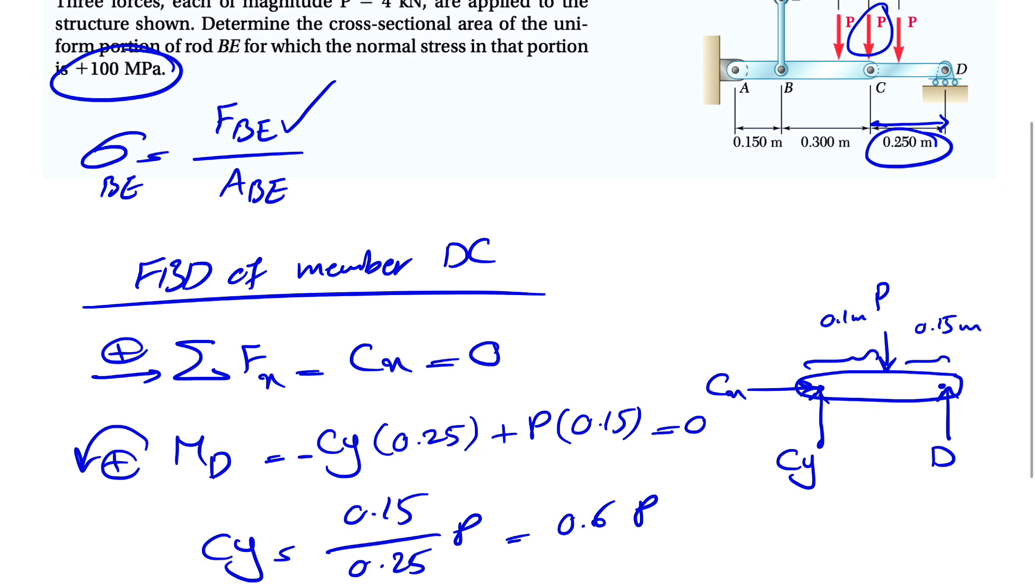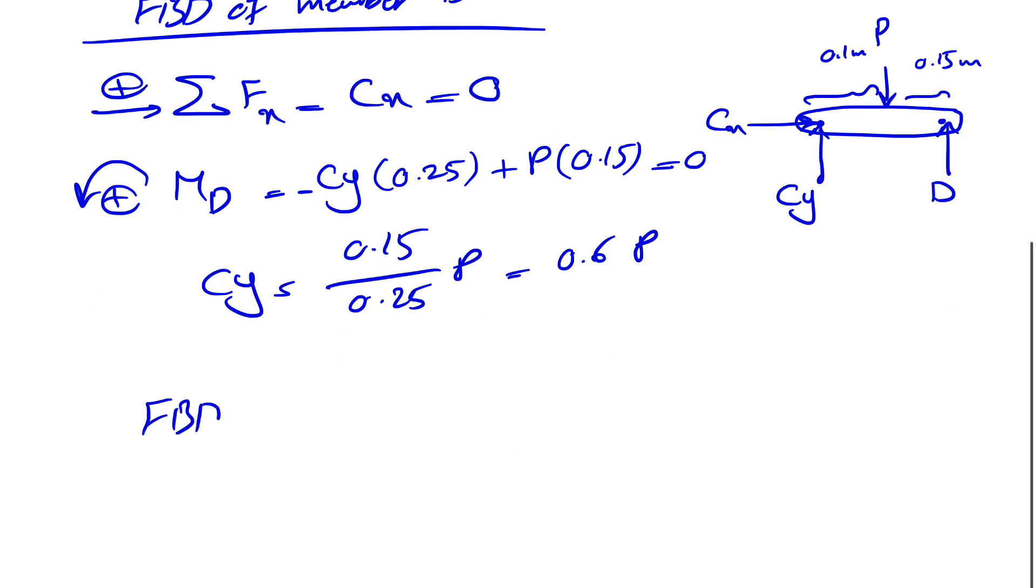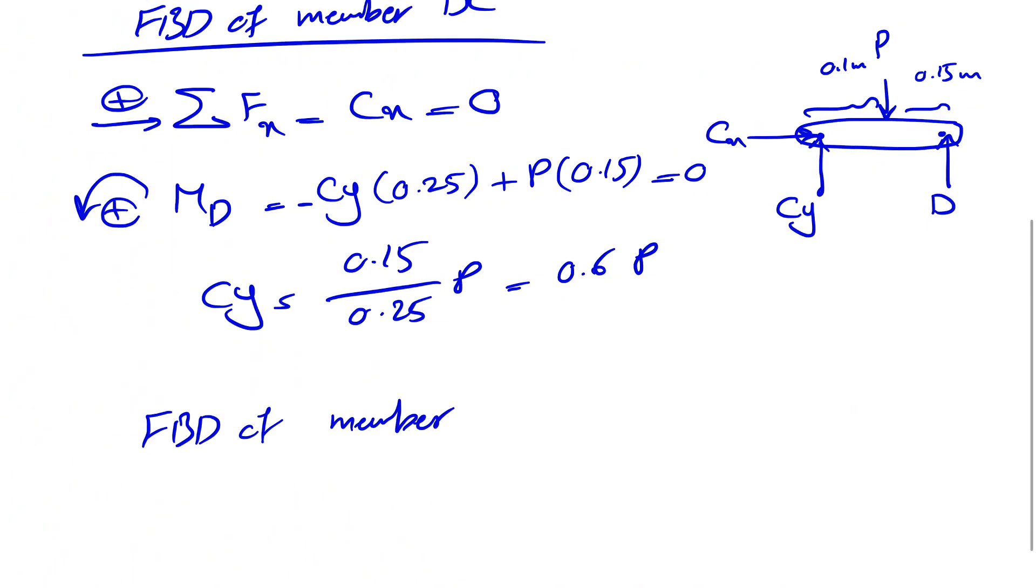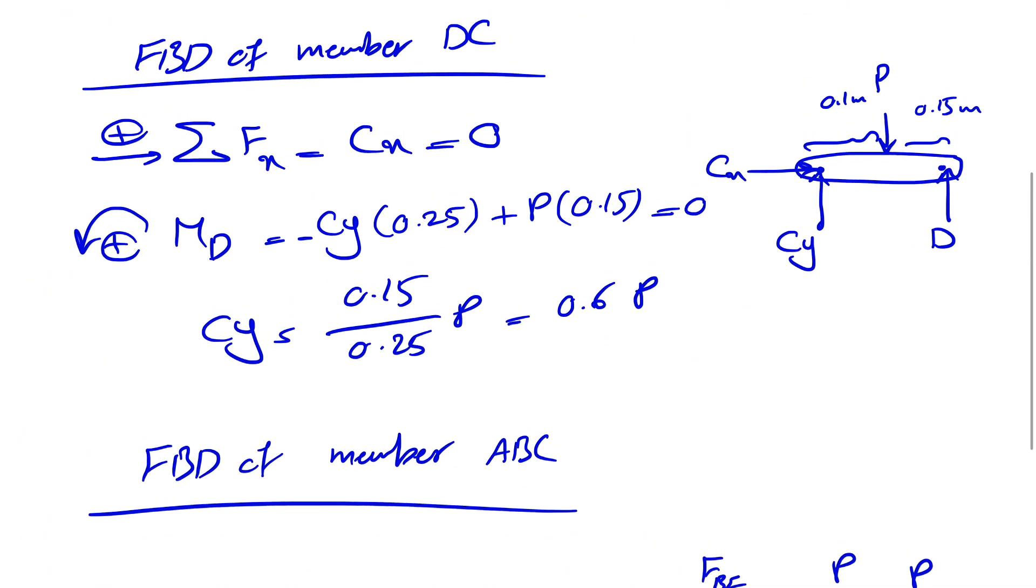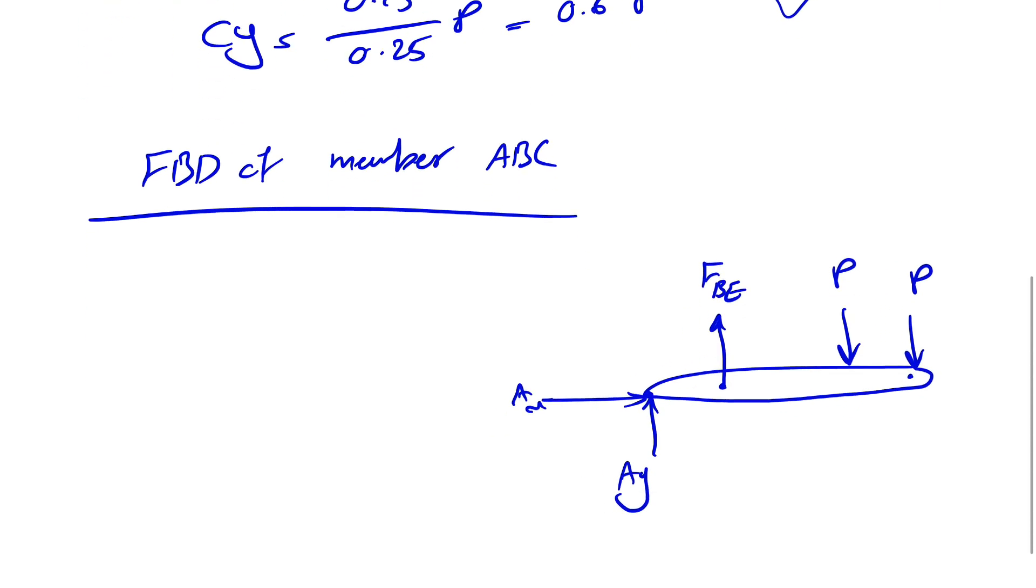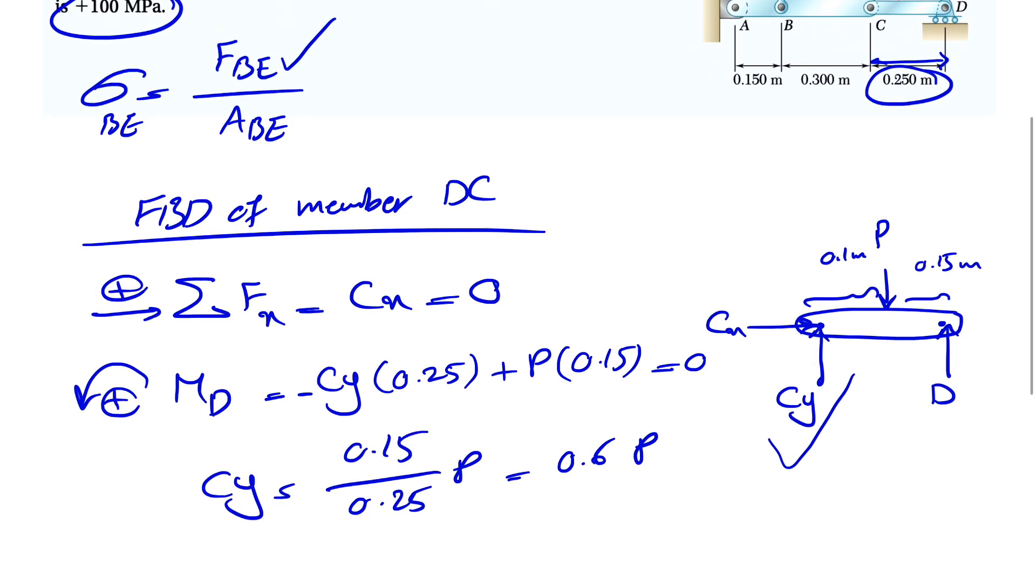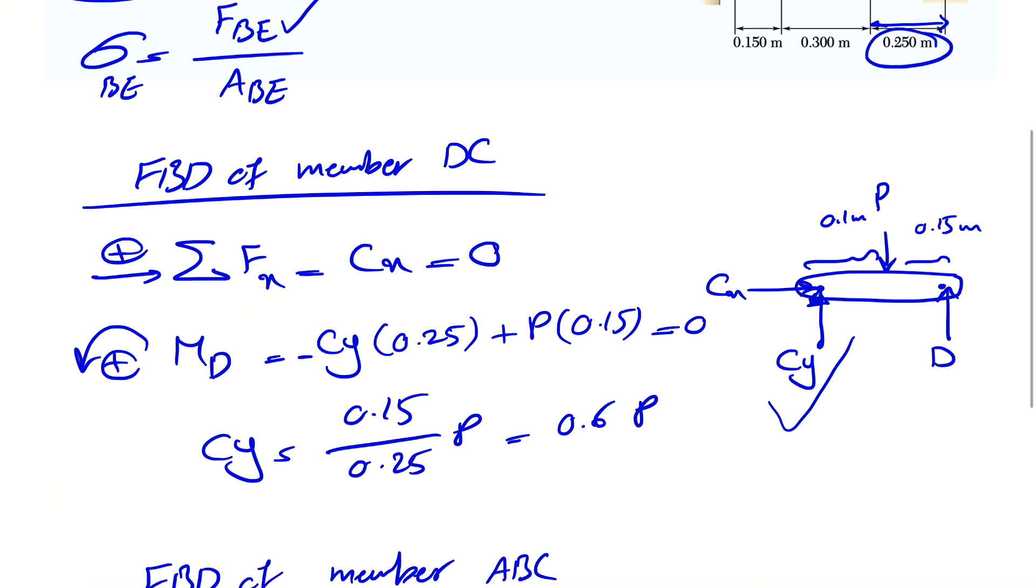Now that we have Cy, we can move on to the other member, ABC. We're going to draw the free body diagram of member ABC. We basically have this member here with force P applying at these two points. We have FBE and we have two forces at A—we can call it Ax and Ay since we have a pin at point A. Since we figured that Cy is upward in the other one, our Cy will be downward based on Newton's law.